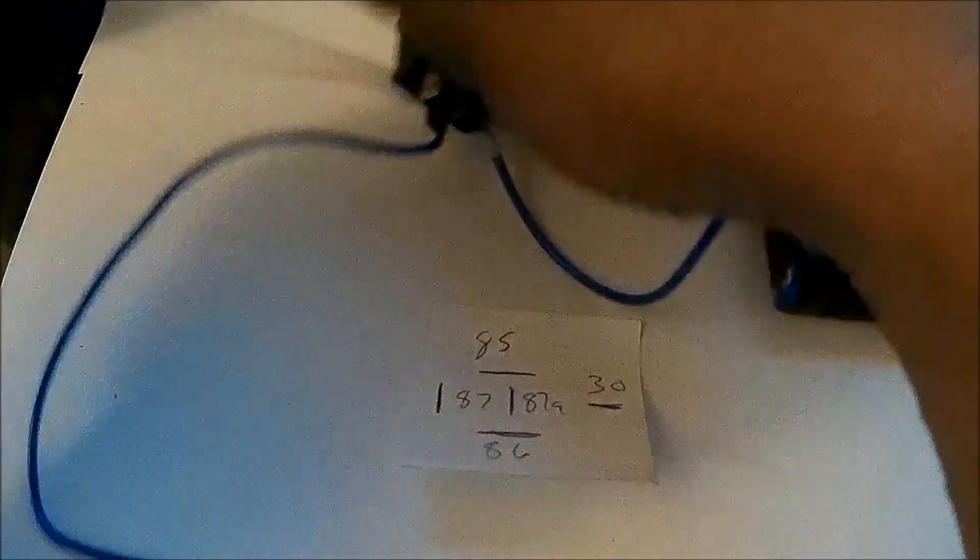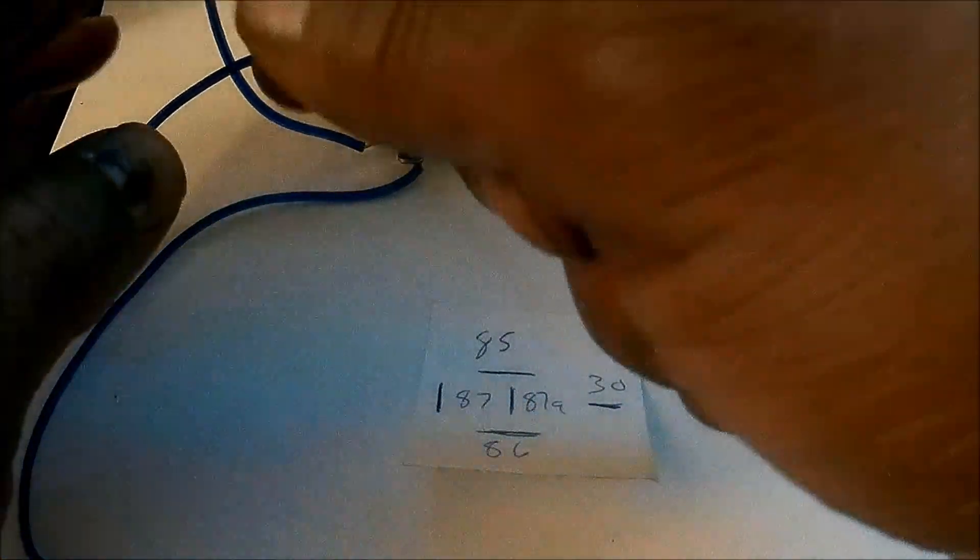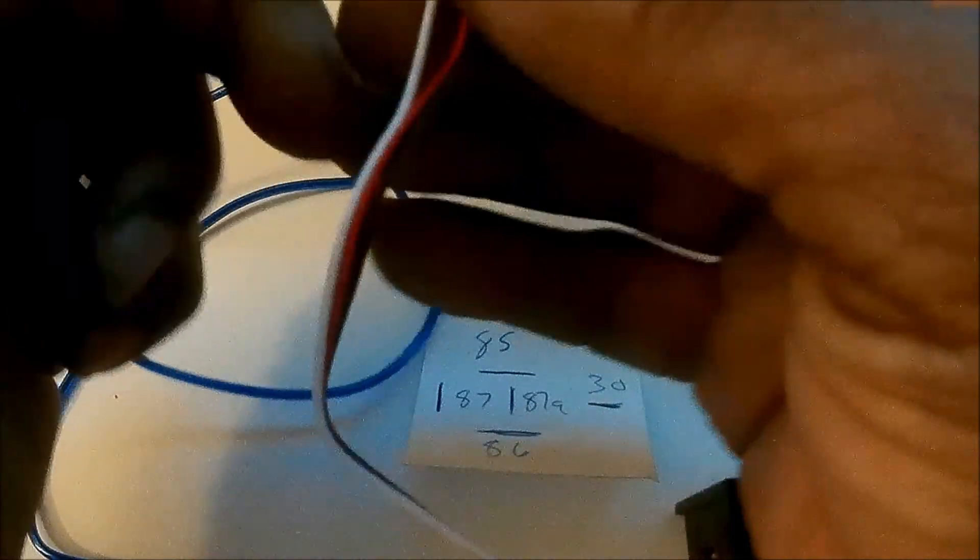On this side right here we have pin 87. This would be the 12 volts going out. So coming in and out, this is basically a switch. We're going to wire 12 volts out into both of these right here.